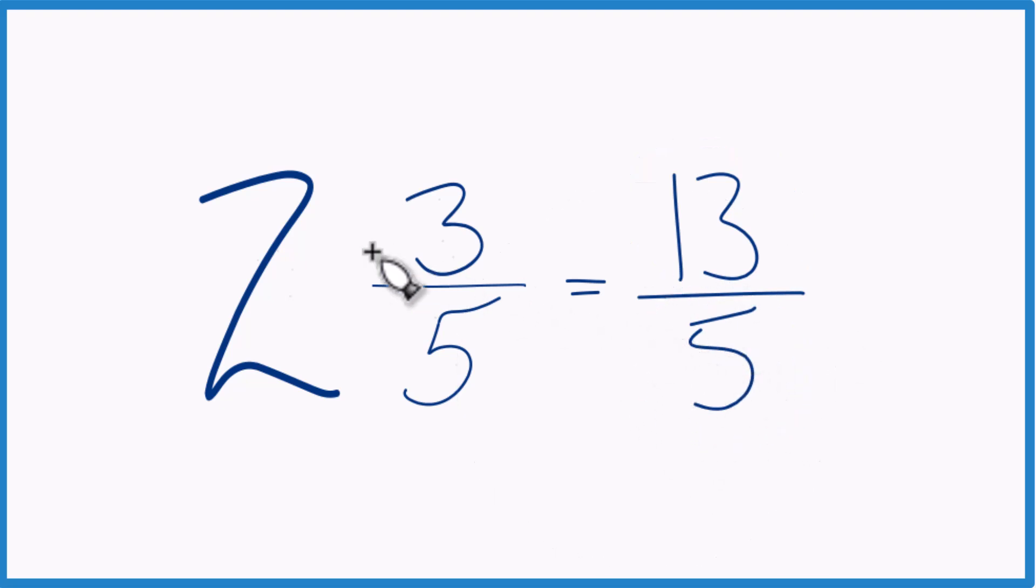Let's do that again. 2 times 5, that's 10, plus 3, 10 plus 3, that's 13. Just bring the 5 across, 13 fifths.